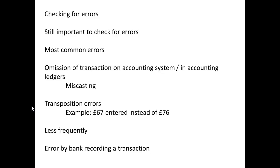It doesn't mean you shouldn't still check for errors. The most common errors are likely to be the omission of a transaction on the accounting system, or in the accounting ledgers if you're still using manual accounting — this is called a miscasting. You may also find a transposition error every now and again; for example, if 67 has been entered instead of 76 pounds. Less frequently, you will find errors made by the bank in recording a transaction.